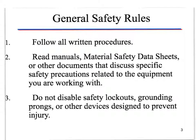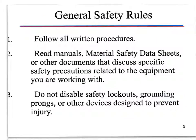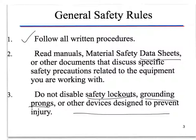General safety rules. You need to make sure that you follow all written procedures. You need to read the manuals and material safety data sheets — there's a wealth of information on there. Make sure you're reading manuals, material safety data sheets, or other documents that discuss specific safety precautions related to the equipment. Do not disable safety lockouts. Grounding prongs are very important, as are any other devices that are there to prevent injury.